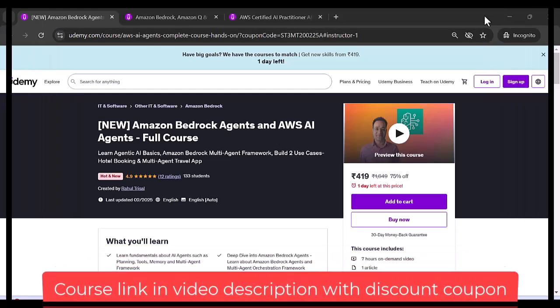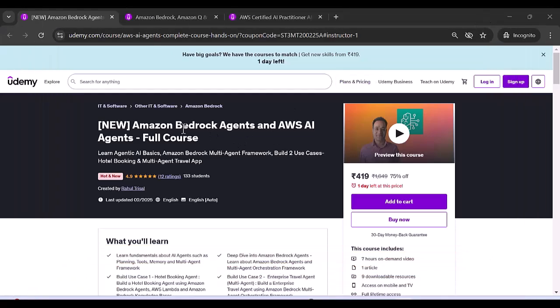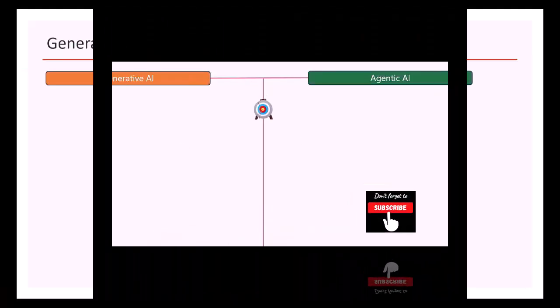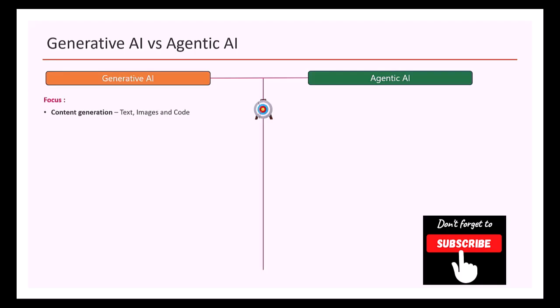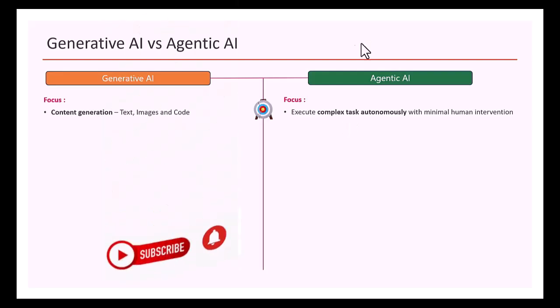In this video, I'm going to show you the difference between agentic AI and generative AI. Let's start with the focus of both. For generative AI, the focus is on content generation — whether you want to generate text, images, or code. But the focus area for agentic AI is to execute complex tasks autonomously with minimal human intervention.